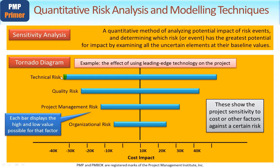You'd want to arrange them with the most severe cost sensitivity at the top, hence giving it this very approximate tornado shape — hence the name tornado diagram. At one extreme, using leading edge technology could reduce costs from a technical perspective by minus $30,000 to $40,000, or it could increase costs by $40,000 or thereabouts. So considering costs as the metric, we can see which risks have the biggest impact — whether the risk is a threat increasing costs, or an opportunity reducing the cost of the project. The example uses costs, but it may be some other aspect you'd want to compare categorized risks against.